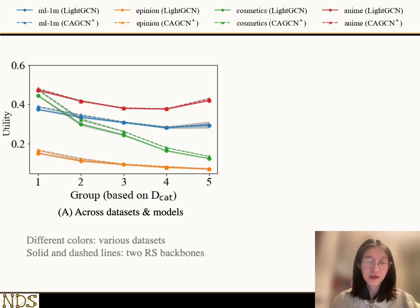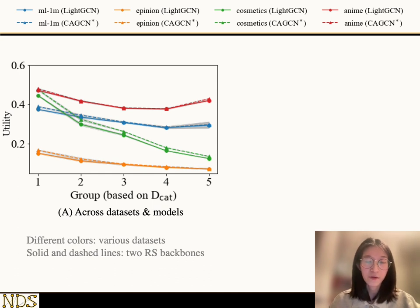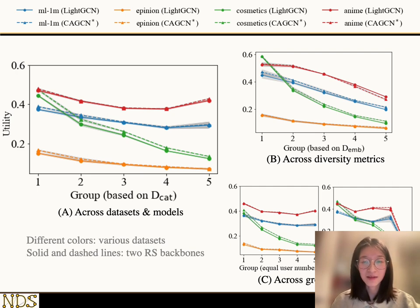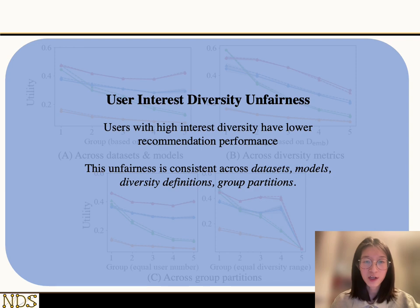Here, different colors show various datasets. Solid and dashed lines represent two recommender system backbones. The groups from left to right have increasing interest diversity. From the results, we observe that when interest diversity increases, the utility performance drops. This finding is consistent across datasets and models. We further tried different diversity metrics and different group partition strategies, and all of them show a similar trend. So, we observe user interest diversity unfairness, where users with high interest diversity have lower recommendation performance.